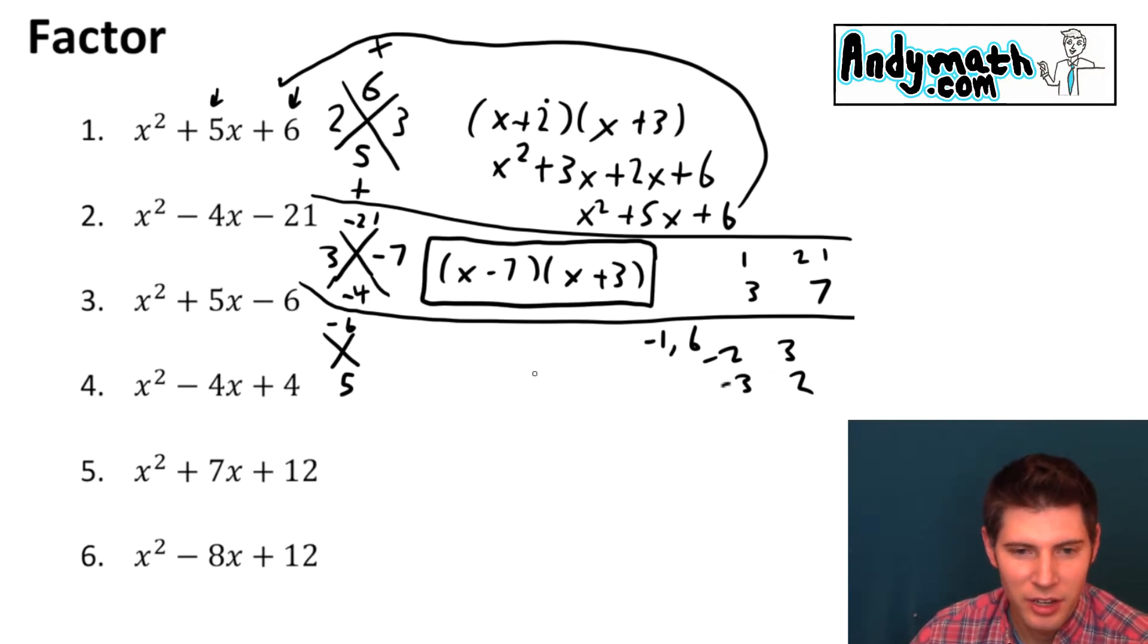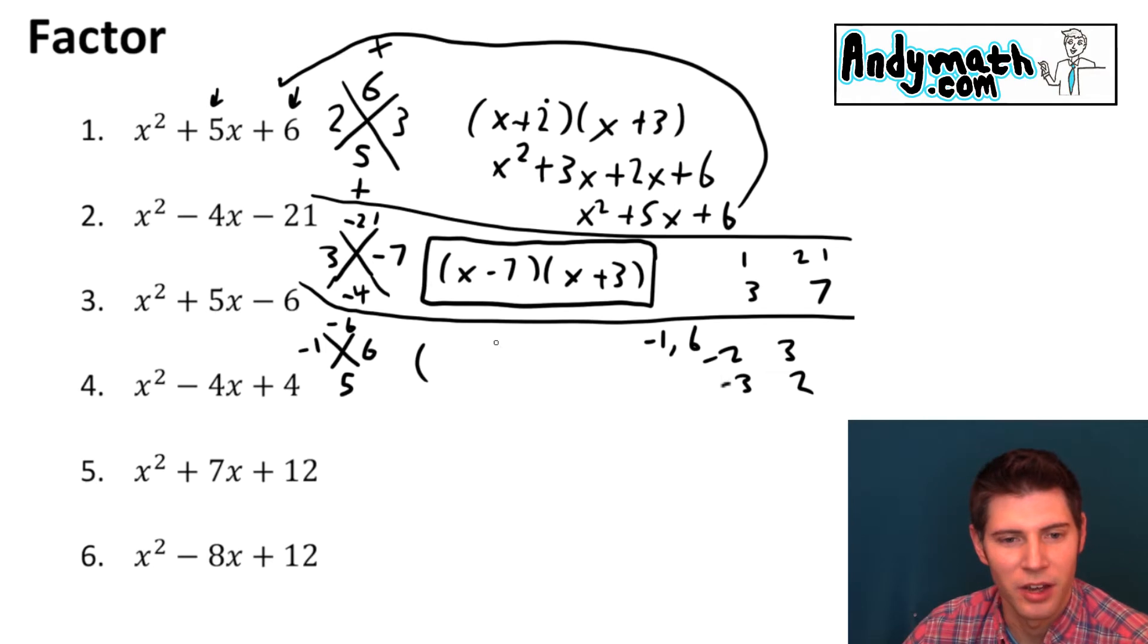That's where it's at if we make the 1 negative. So negative 1 and positive 6. Negative 1 times 6 is negative 6 and when you add them you get positive 5. So now we found our two numbers x minus 1 x plus 6 and that's the answer to number 3.